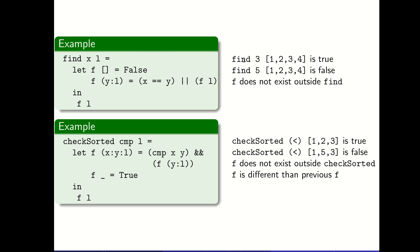The find behaves as we would expect. We can ask to find 3 in the list 1, 2, 3, 4, and we get true. We can ask to find 5 in the list 1, 2, 3, 4, and we get false. But f ceases to exist after that in statement. It does not exist outside of the find function.